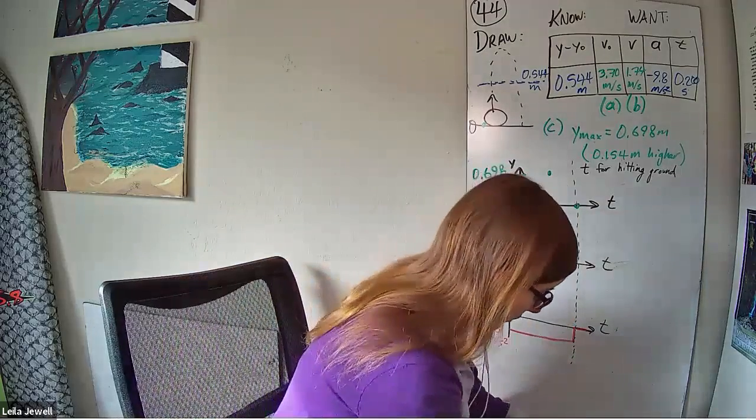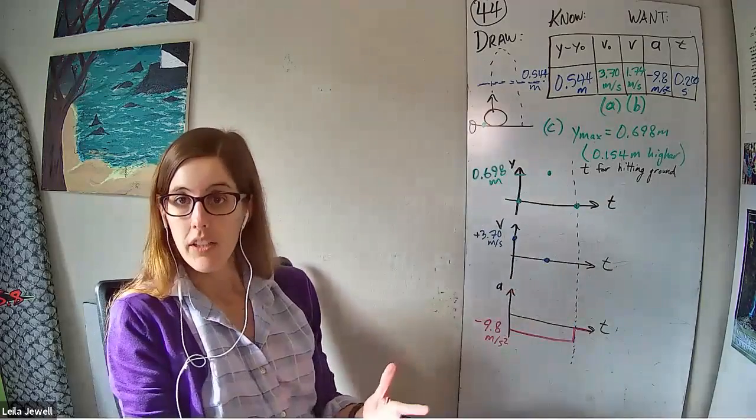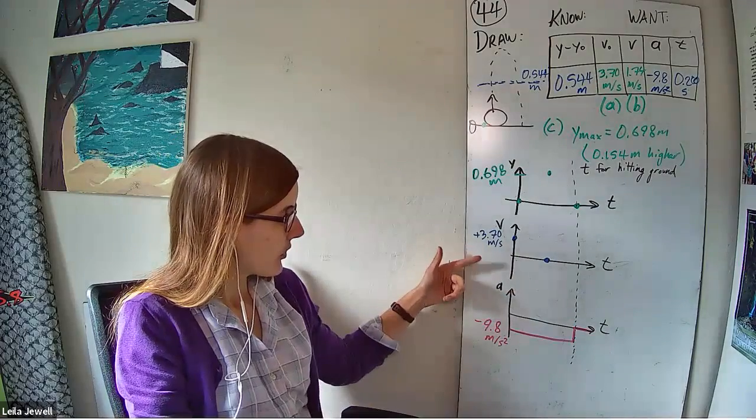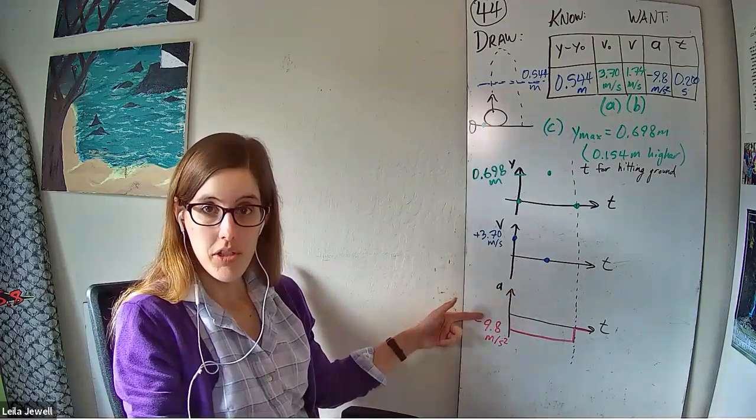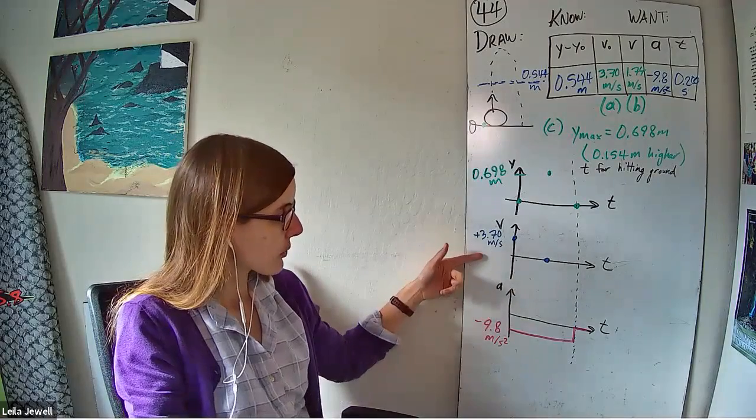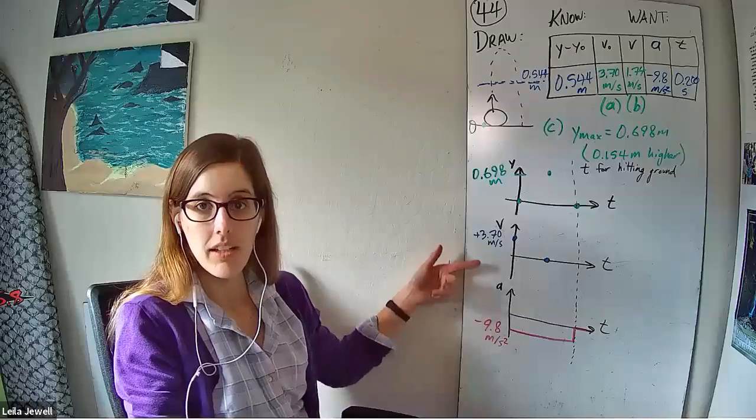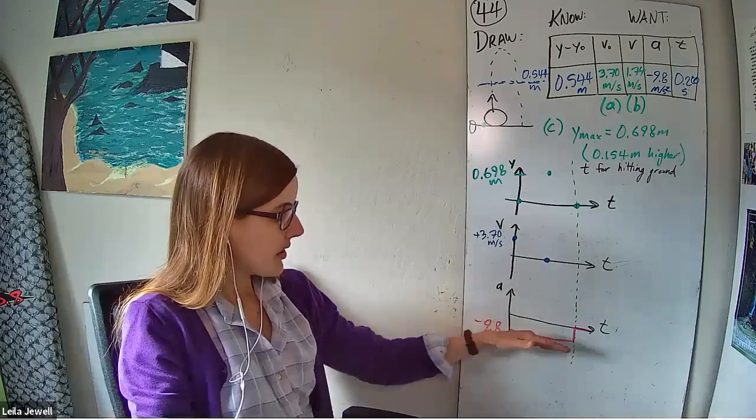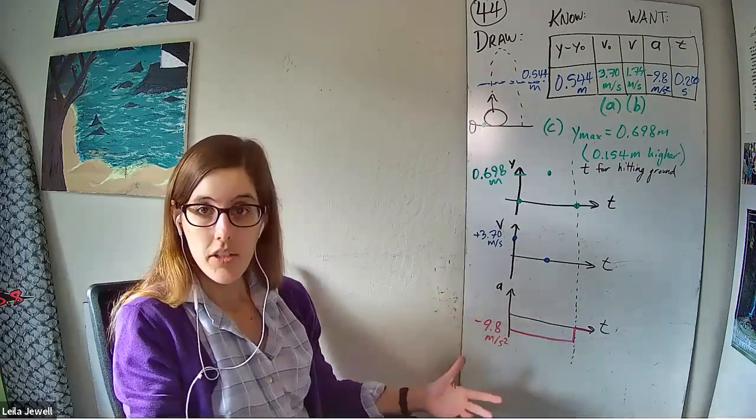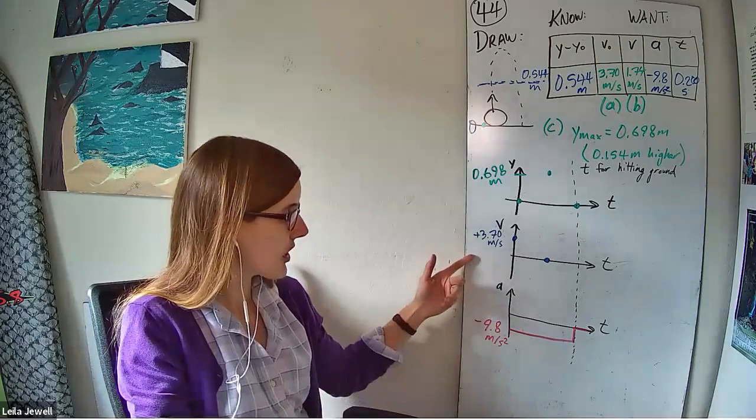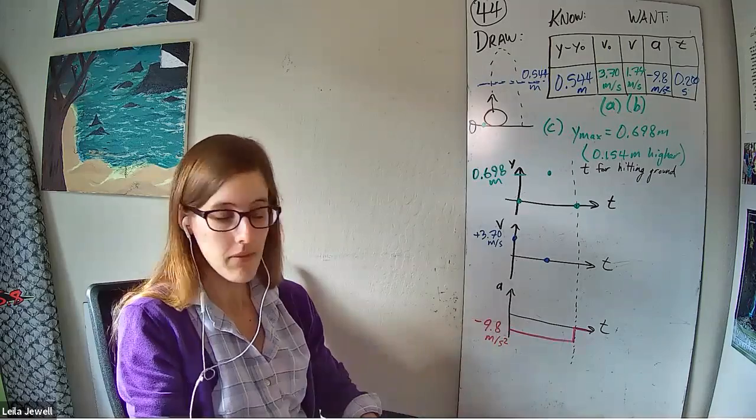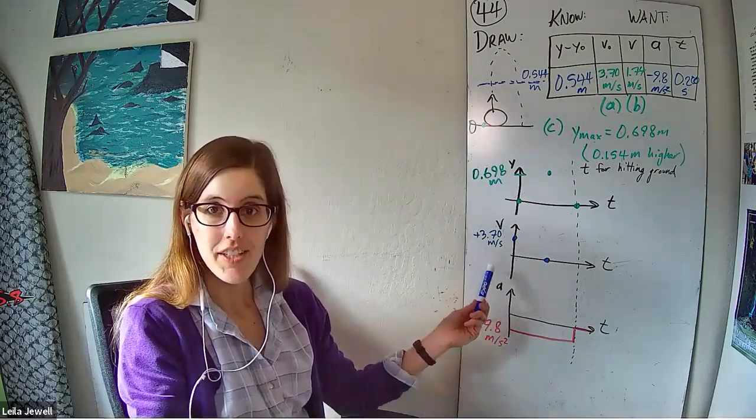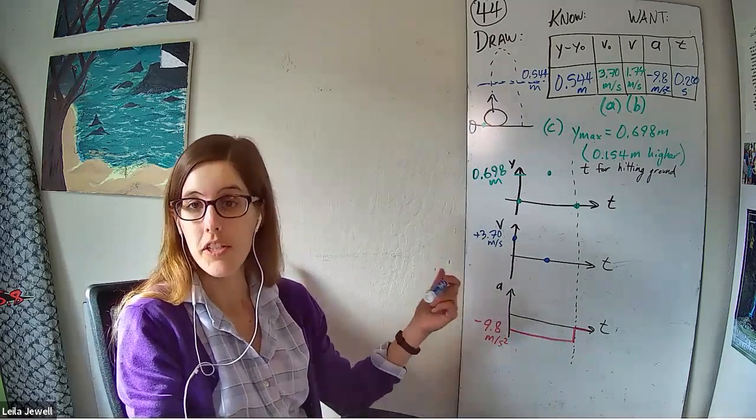And now that we filled those in, we can bring in our knowledge of calculus in order to finish the graphs. So we know that the derivative of velocity with respect to time is acceleration. So if we want to figure out the graph of velocity based on acceleration, we need the anti-derivative. So if acceleration has a constant value at all times, that tells us that the derivative, the slope of the velocity versus time has to be constant with all time. In other words, a constant acceleration tells us that velocity needs to have a constant slope, or it needs to be a straight line.